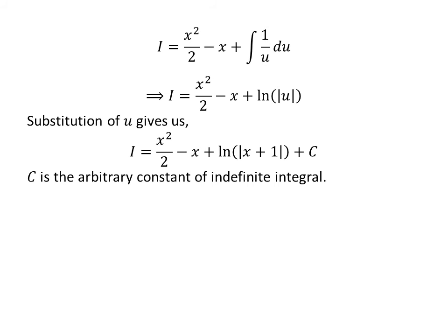As we had assumed u is equal to x plus 1, i is equal to x squared upon 2 minus x plus natural log of the absolute value of x plus 1, then add capital C. This is the arbitrary constant of the indefinite integral. Never forget to add this constant at the end of any indefinite integral.